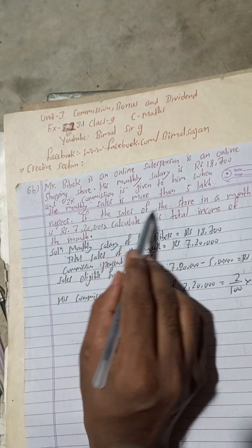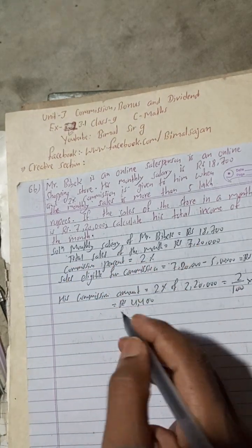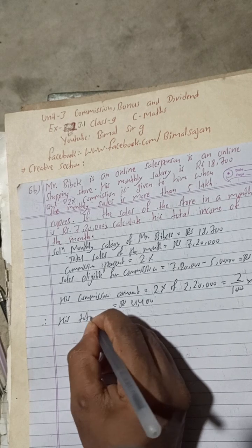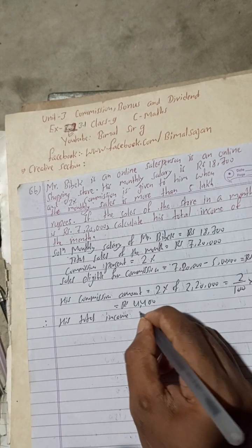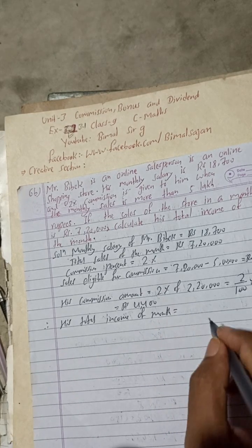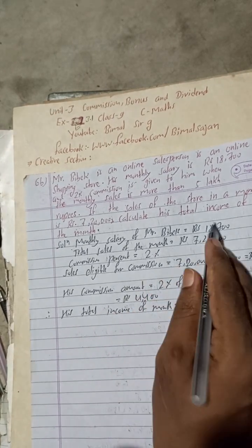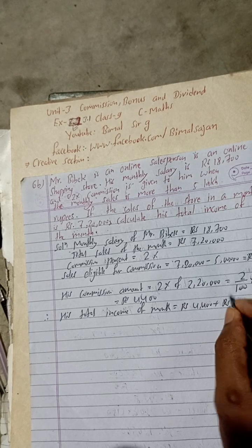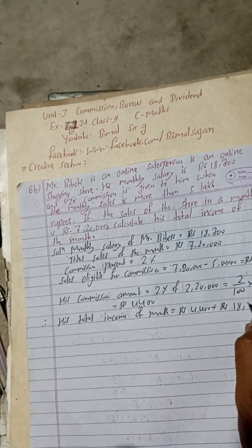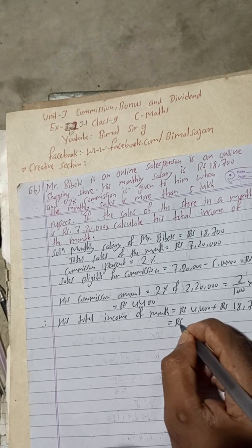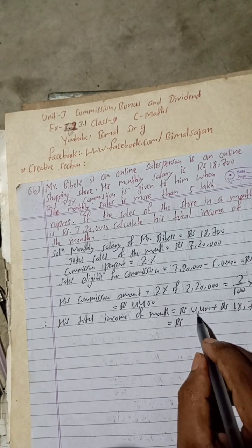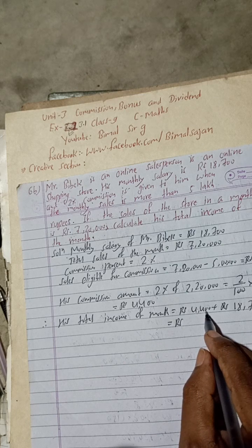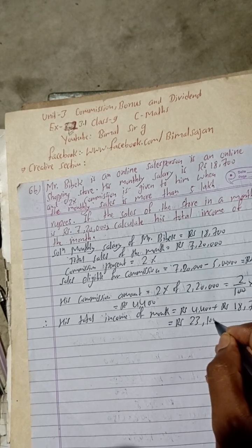Now we have to calculate his total income of the month. His total income of the month is equal to his commission amount plus his monthly salary. So this is Rs 4,400 plus Rs 18,700, which is equal to Rs 23,100.